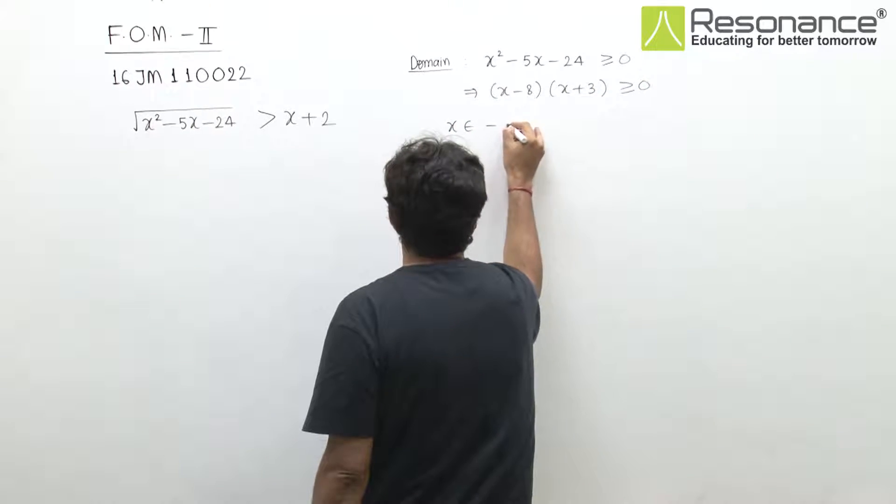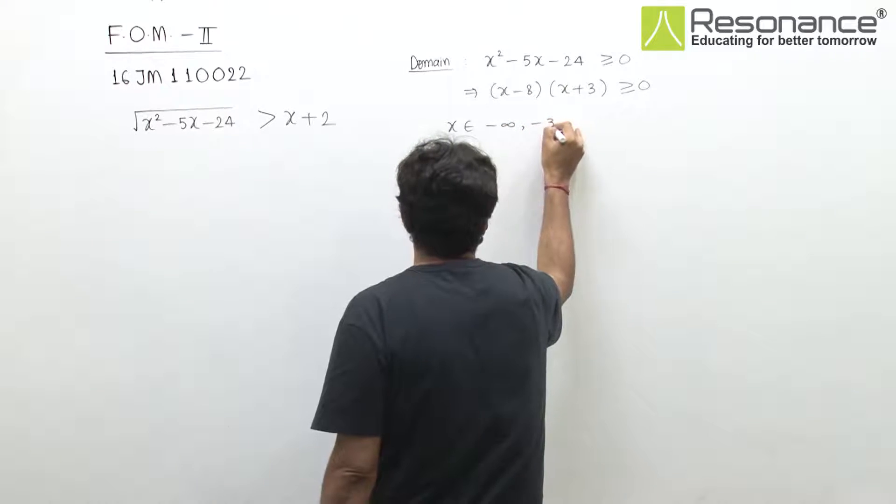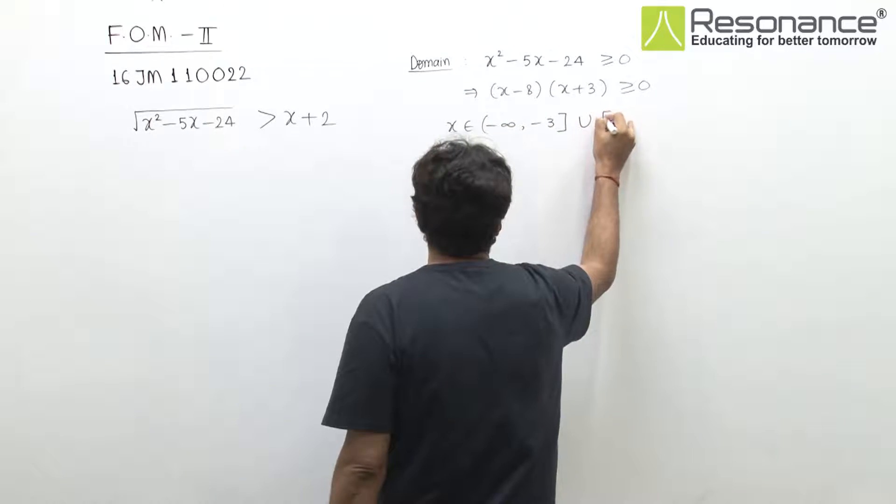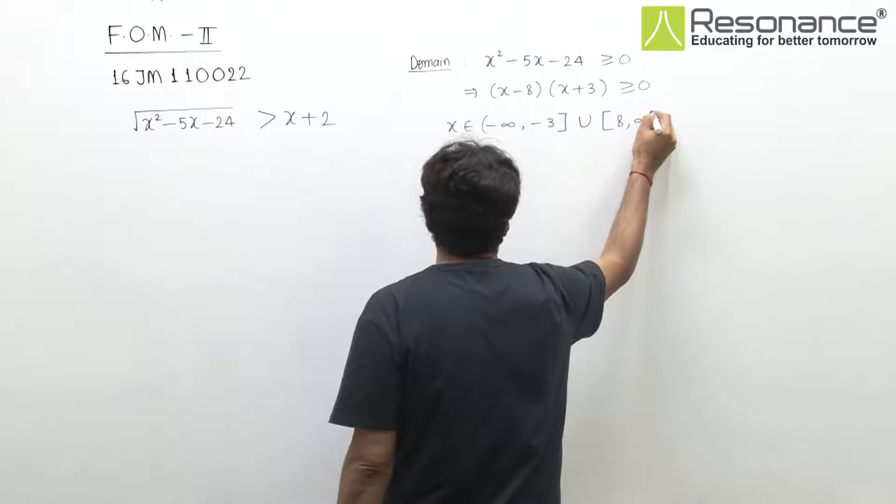So on the number line we get the domain as (-∞, -3] union [8, ∞), right?